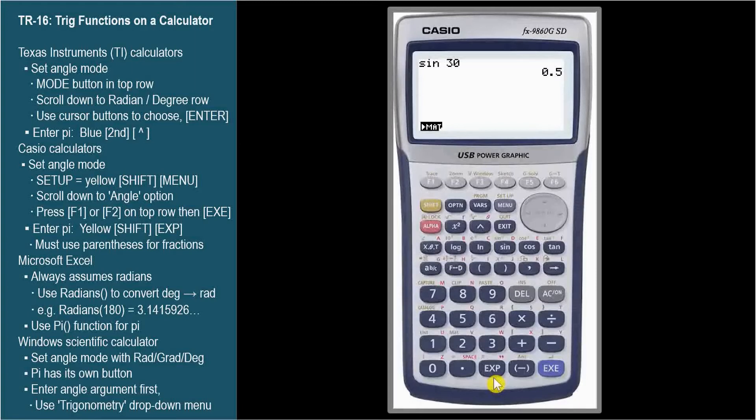Now we're going to find cosine 5 pi over 6. For the Casio, we're going to have to be very careful with our parentheses. Press cosine, then 5, then pi, division, 6, Execute.